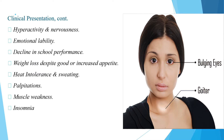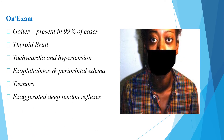Patients with Graves disease present with hyperactivity, nervousness, emotional lability, declining school performance, weight loss despite good or increased appetite, heat intolerance, sweating, palpitations, muscle weakness, and insomnia. On examination, goiter is present in 99 percent of cases, along with tachycardia, hypertension, exophthalmos, periorbital edema, tremors, and exaggerated deep tendon reflexes.